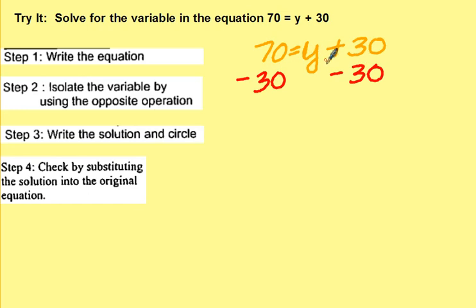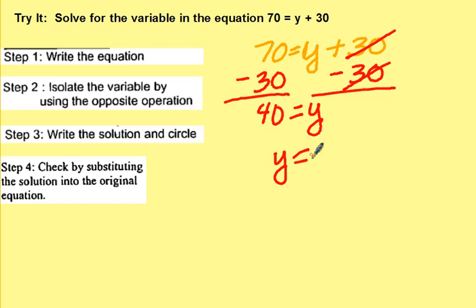Remember, you're trying to get this y by itself. Isolate the variable. The positive 30 and a negative 30 will cancel each other out. y equals 40. Rewrite it: y equals 40.